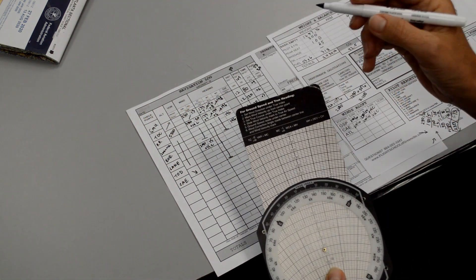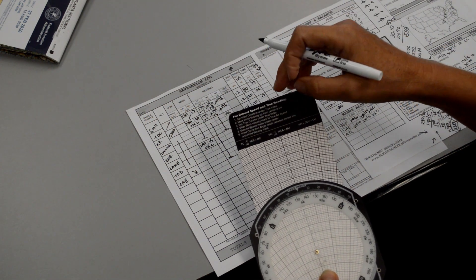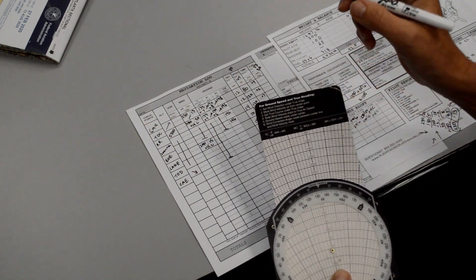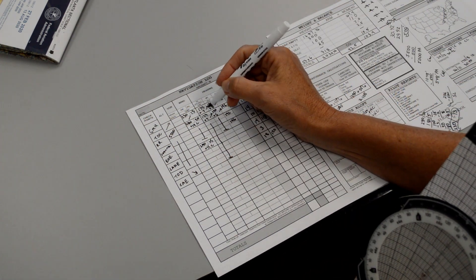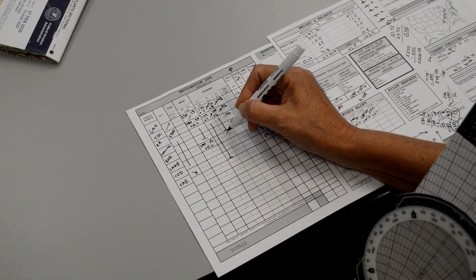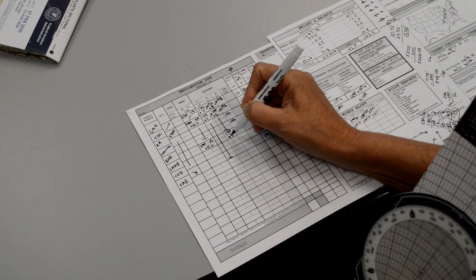Again, if I can't remember if I'm supposed to add or subtract, use your little formula at the top of your E6B. And it tells us to add it if it's to the right. So down here, my magnetic course was still 1, 4, 0. The wind correction angle is plus 3.